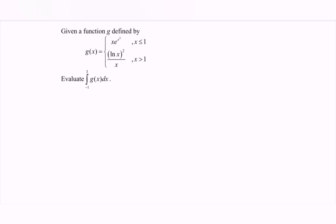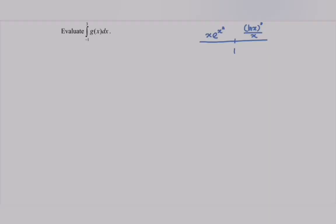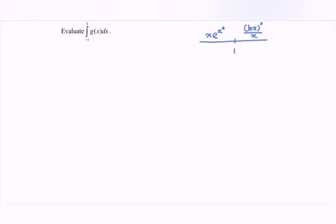where we have to illustrate the situation on a real number line with the value 1. So it refers to the first function, we have x less than or equal to 1, where the function is x multiplied by the exponential e to the x squared. Next we have x greater than 1, where we have ln x bracket squared over x. So refer to the question, evaluate the situation.